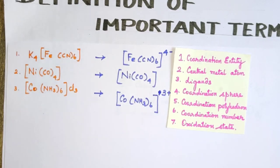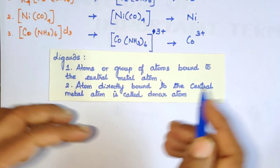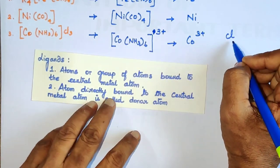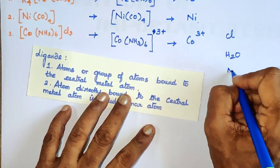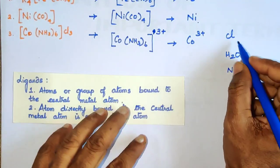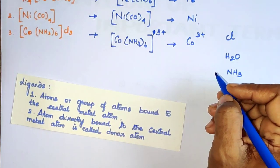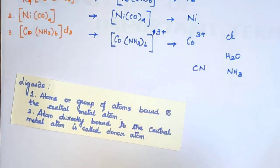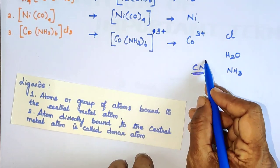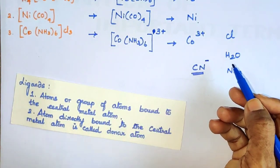The third term is Ligands. A ligand is an atom - for example Cl - or a group of atoms such as H2O or NH3, that is directly bonded to the central metal atom. For example, CN minus is a ligand that forms a direct bond to the metal. Ligands donate a pair of electrons to the central metal atom.